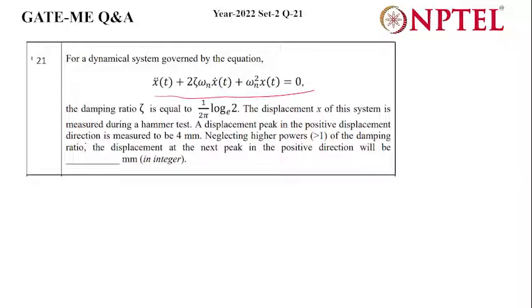The damping ratio ζ is equal to 1/(2π) log base e of 2. The displacement x of this system is measured during a hammer test. A displacement peak in the positive displacement direction is measured to be 4 mm. Neglecting higher powers of the damping ratio, the displacement at the next peak in the positive direction will be in mm.